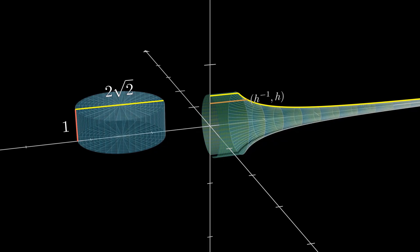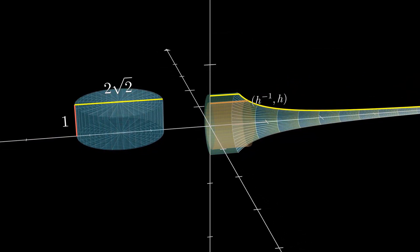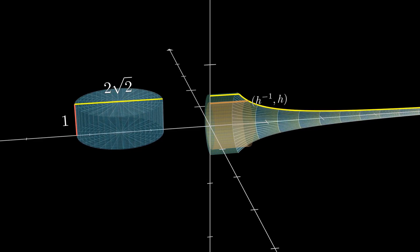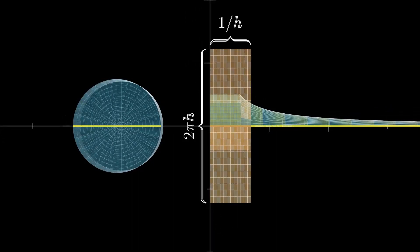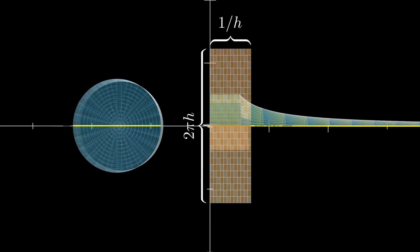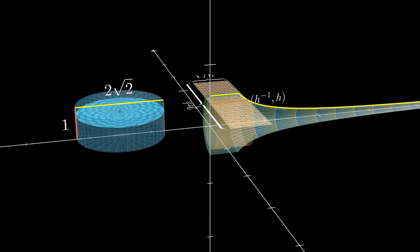When we revolve the curve to form the horn, this horizontal line generates a cylinder of radius h and length 1 by h. If we now flatten out this cylinder, the rectangular surface so formed has length 1 by h and width 2 pi h, giving an area of 2 pi. This area is independent of the height and is equal to that of the section of the cylinder irrespective of the height chosen.